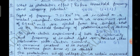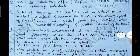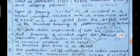The second question is a numerical problem: Light of frequency 7.21 × 10¹⁴ Hz is incident on a metal surface. Electrons with a maximum speed of 6.0 × 10⁵ m/s are ejected from the surface. What is the threshold frequency of photoemission of electrons? This question was asked in 2019 and is a 3-marks question.